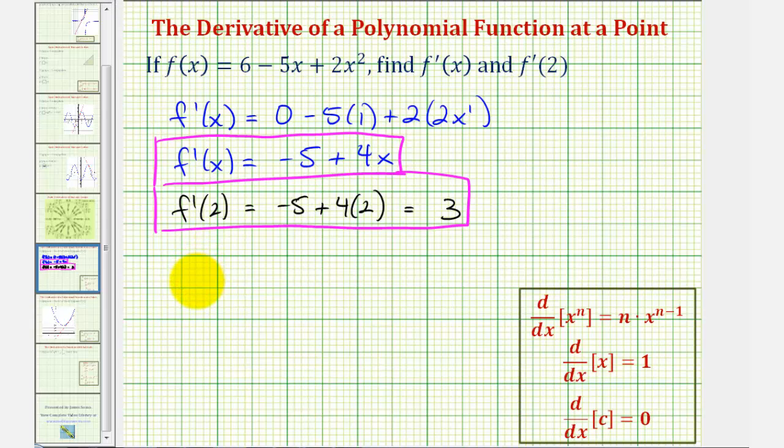Let's go ahead and take a moment and find the point of tangency, or the point on the function where the slope of the tangent line would be 3. We already know the x coordinate is going to be positive 2. To find the y coordinate, we'd have to substitute 2 back into the original function. So let's go ahead and do that. F of 2 would be equal to 6 minus 5 times 2 plus 2 times 2 squared. So this would be 6 minus 10 plus 8, which would be positive 4.